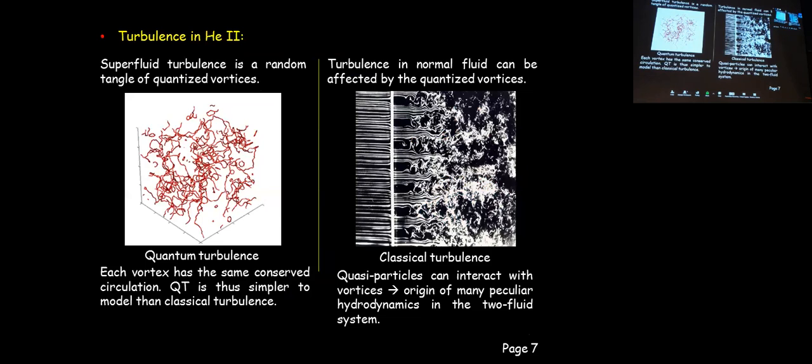Since we have two fluid components, turbulence can occur in both fluids. In the superfluid, turbulence is essentially a tangle of quantized vortices — if you know the position of those vortex lines, in principle you can calculate the complete velocity field. Turbulence in the normal component is more classical. However, quasiparticles can scatter off the quantized vortices, leading to mutual friction between the two components, which can significantly affect the hydrodynamics of both fluids.